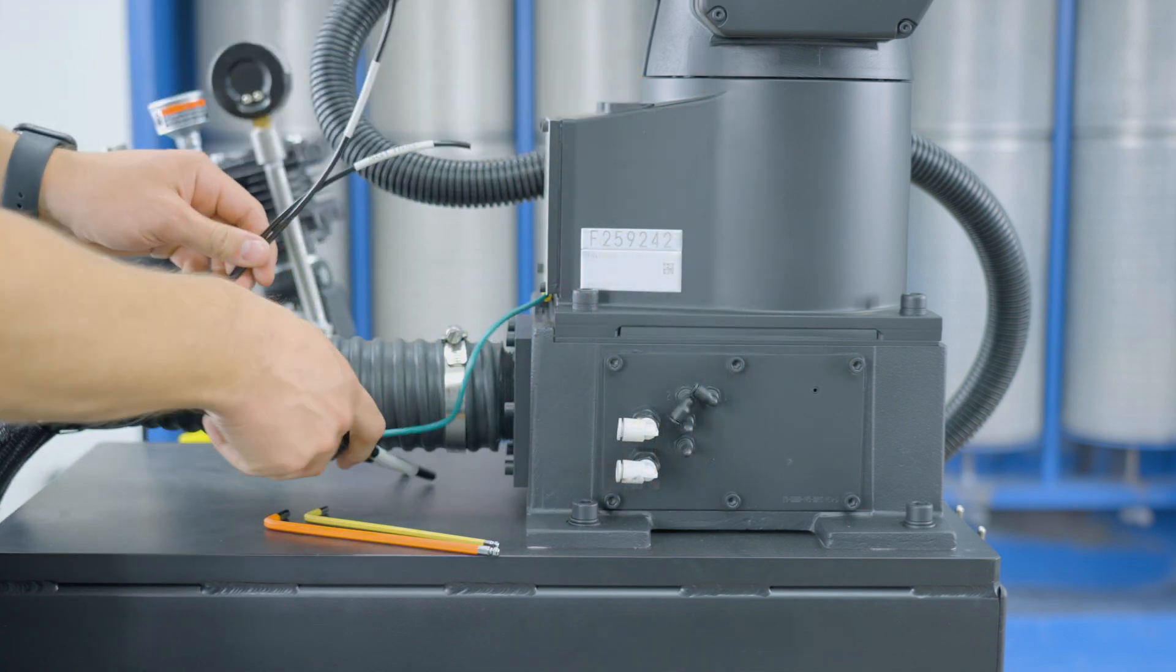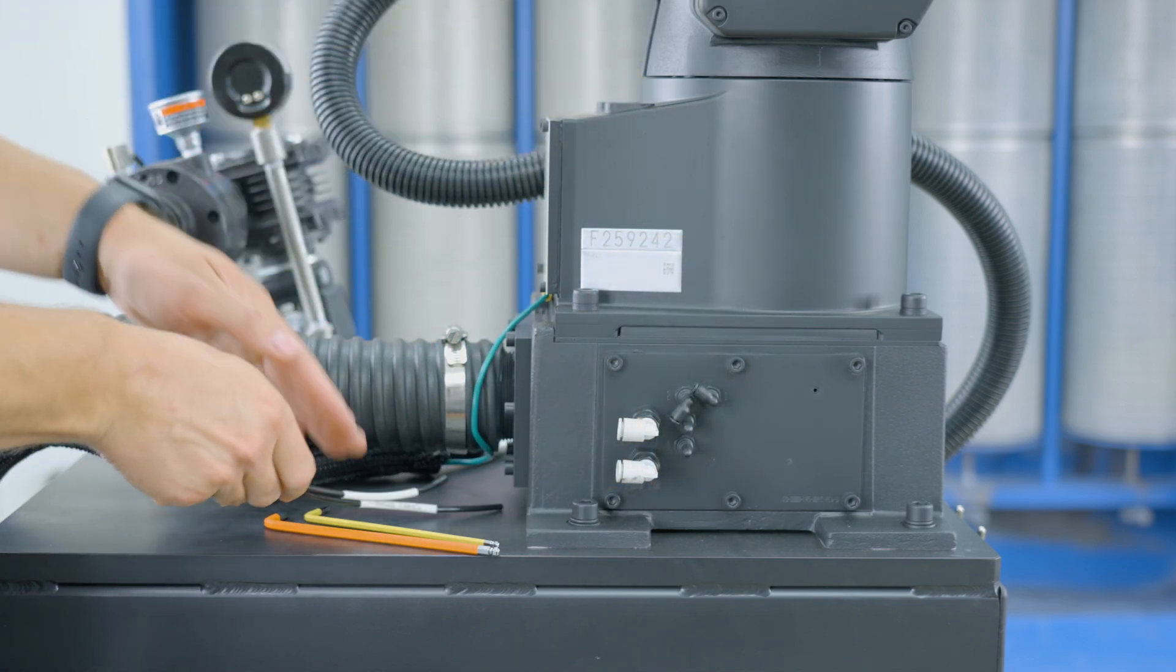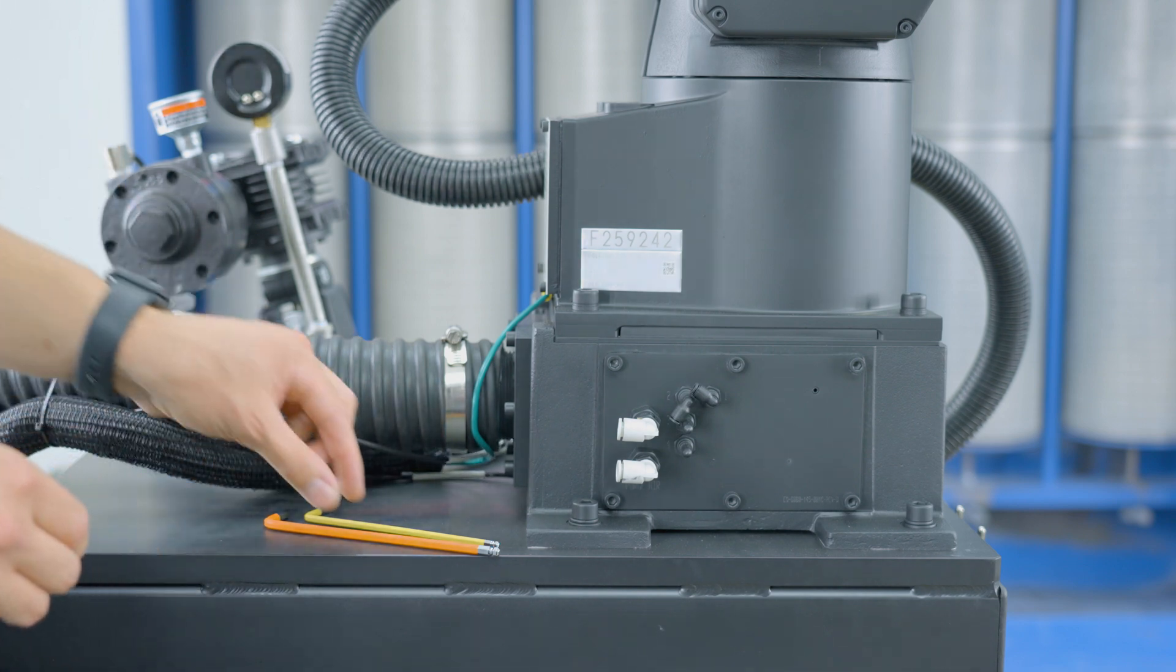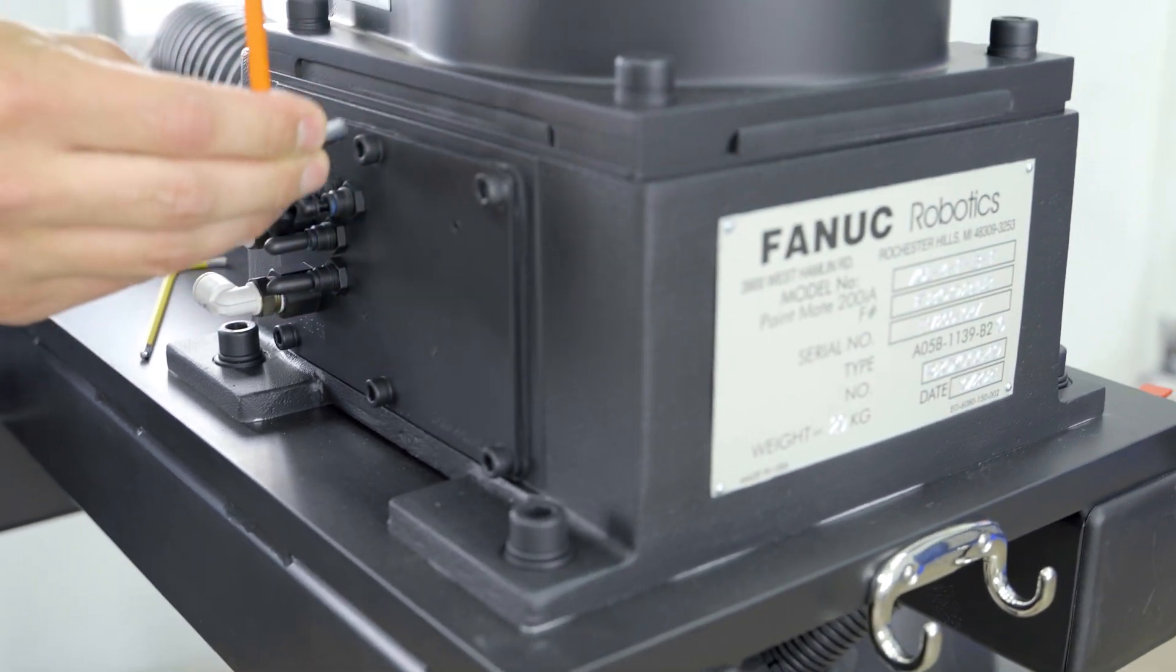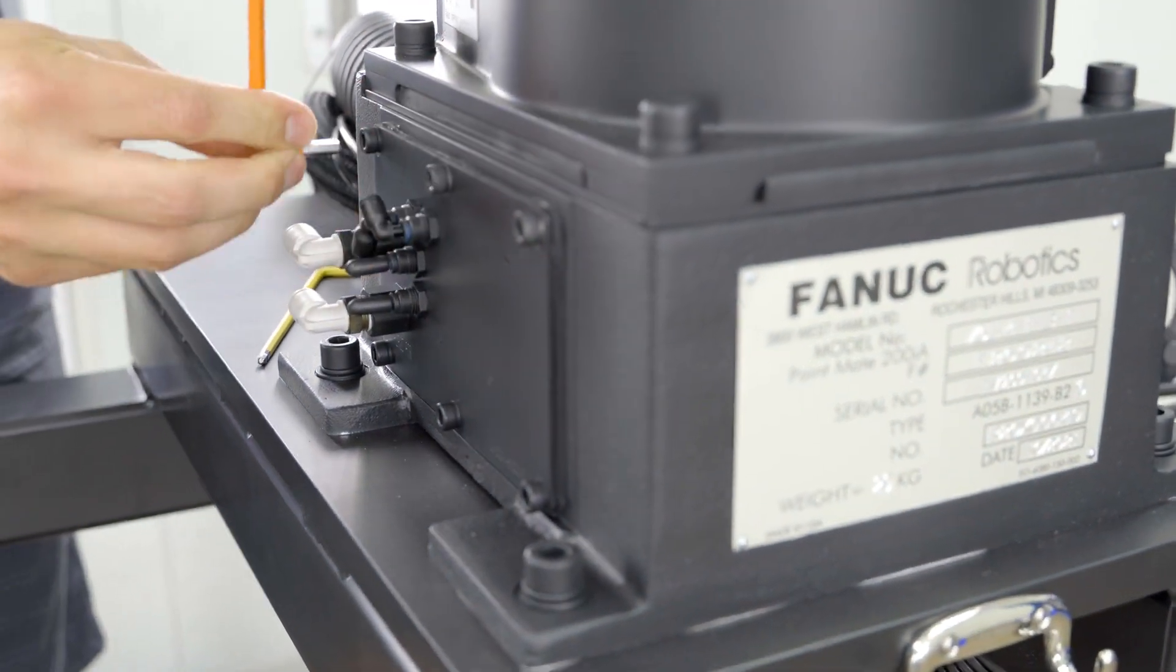Tuck the air hoses under the robot and out of the way. Utilize a 5 millimeter allen wrench or equivalent to remove all six screws from the base plate housing.